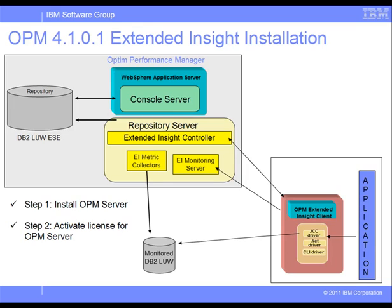With Optum Performance Manager Extended Insight, we can quickly identify performance issues by monitoring database response time as seen by the application. To use Extended Insight, we must first activate the Extended Insight Server components by applying a license to the Optum Performance Manager Server using the Extended Insight Activation Toolkit. This activation also enables the display of detailed metrics for workload management and other features available with Optum Performance Manager.